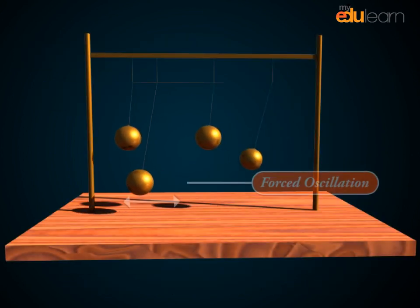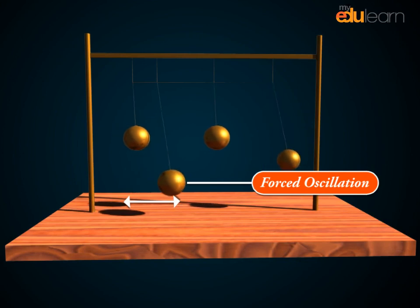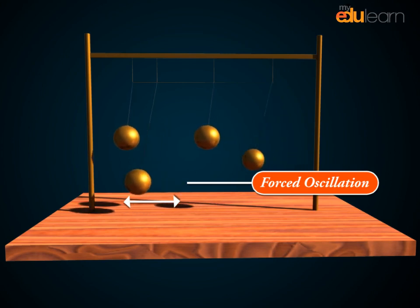After a sufficiently long period of time, when the energy input per cycle equals the energy lost per cycle, a steady-state condition is reached in which the oscillations proceed with constant amplitude.